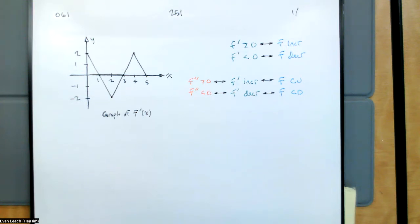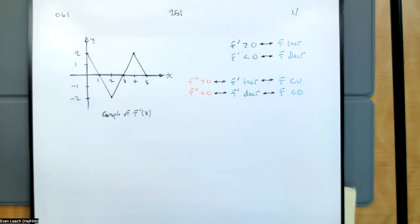But wait, there's more. If the first derivative is increasing, then the function is concave up. If the first derivative is decreasing, then the function is concave down. So the direction of the derivative tells us about the concavity of the function.